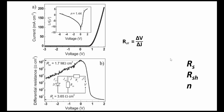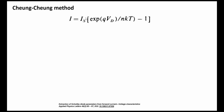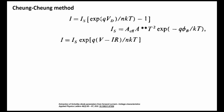Another approach is known as the Cheung method. Starting from the standard Shockley diode equation, this is expanded — the saturation current Is is written in expanded form. The diode voltage Vd is given by V minus I·Rs, taking only series resistance into account. The minus-one term is dropped because when Vd is greater than 3kT/q, the exponential dominates.